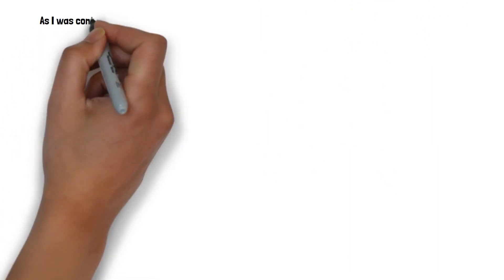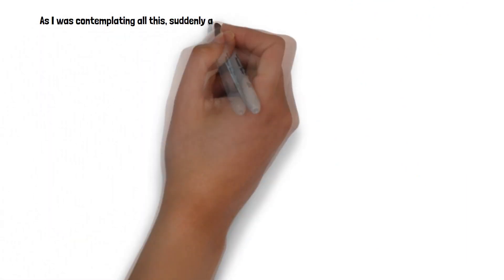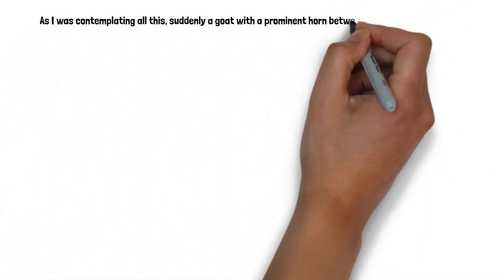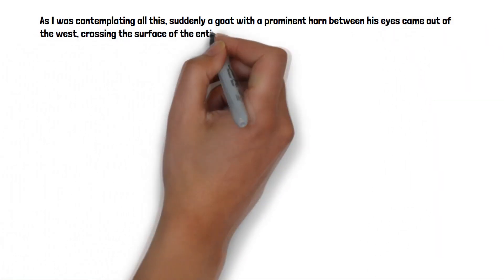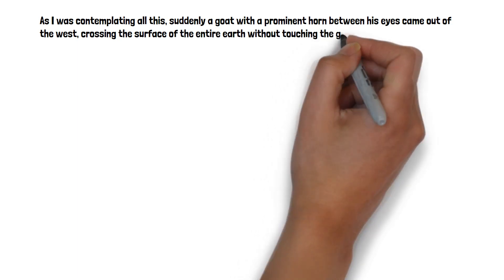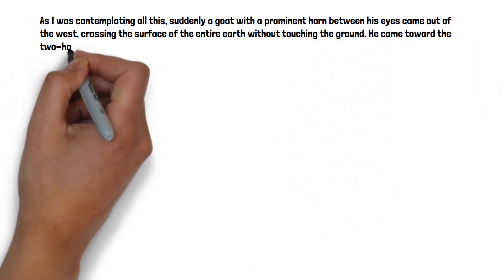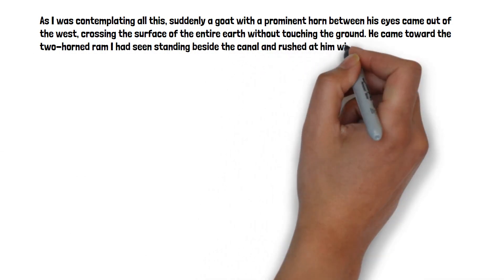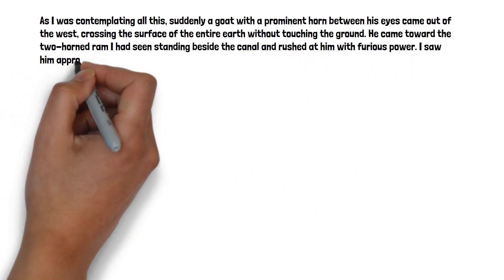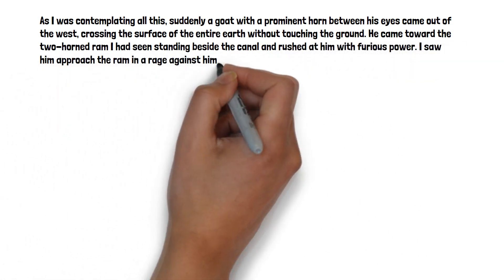First, Daniel 8:5-8. As I was contemplating all of this, suddenly a goat with a prominent horn between his eyes came out of the west, crossing the surface of the entire earth without touching the ground. He came toward the two-horned ram I had seen standing beside the canal and rushed at him with furious power. I saw him approach the ram in a rage against him, and he struck the ram and shattered his two horns.